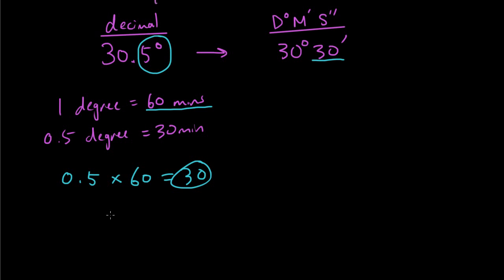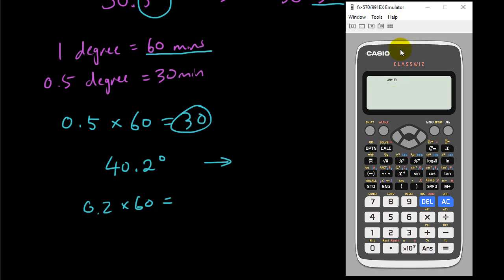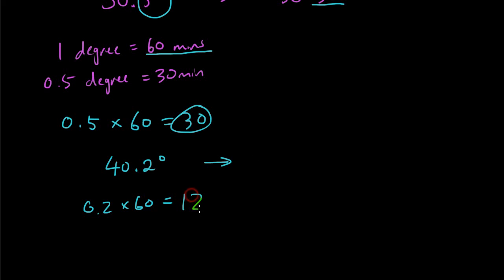So let's try it again. Let's try converting 40.2 degrees to minutes and seconds. So you go 0.2 times 60. And the answer is 0.2 times 60, a lot of you probably can do it in your head, it's 12. So it'll be 40 degrees, 12 minutes.